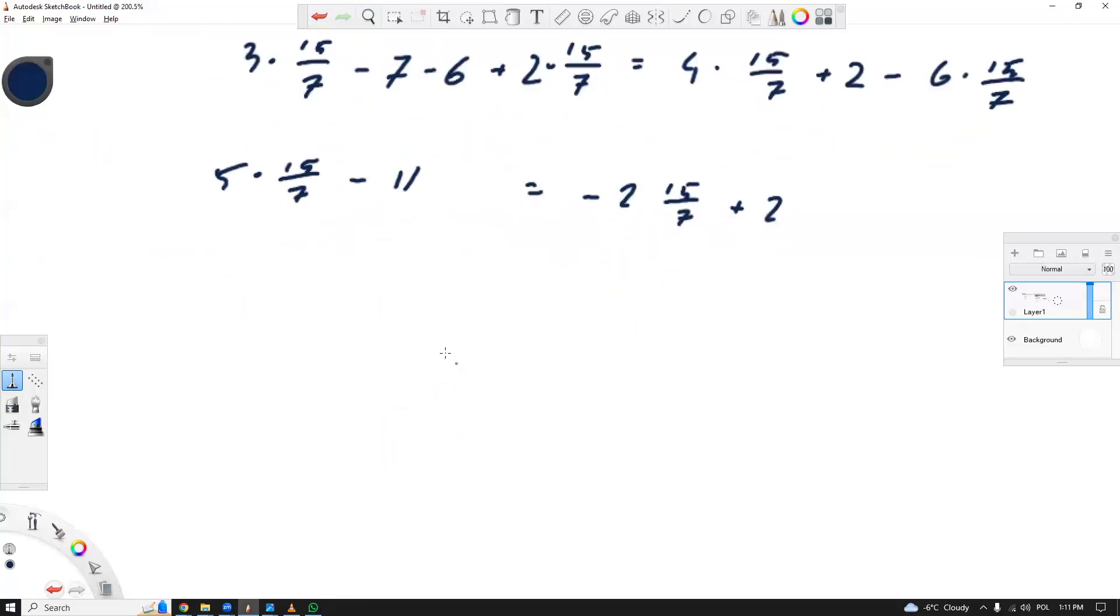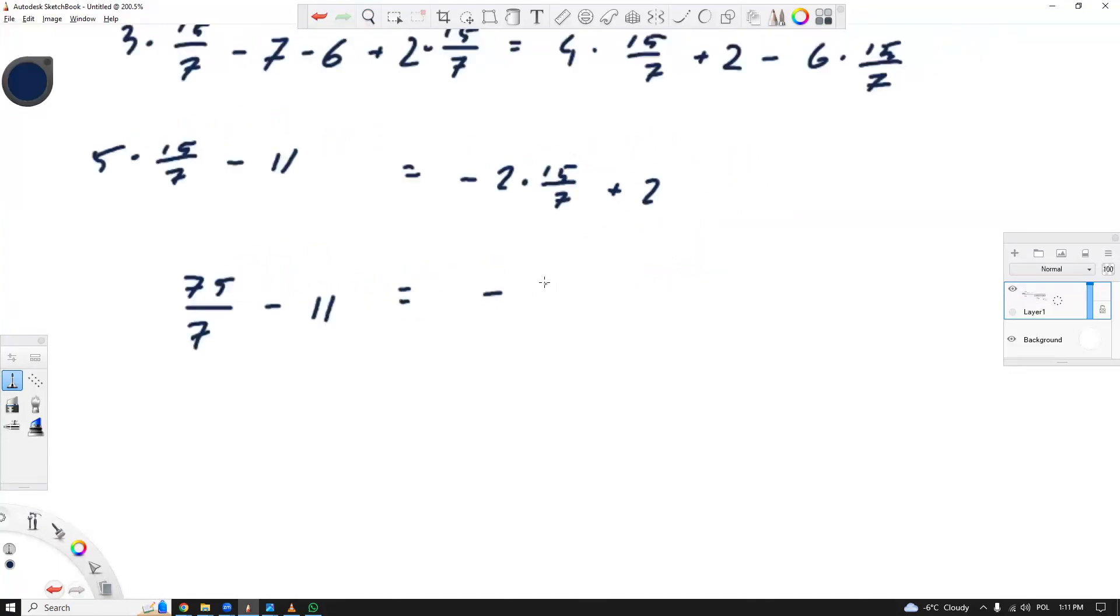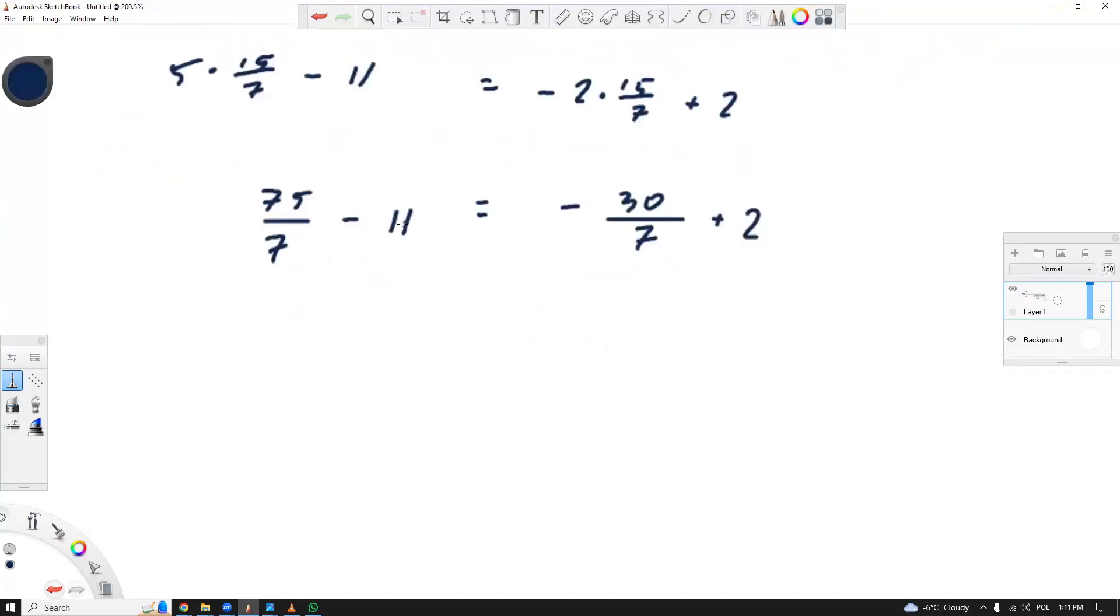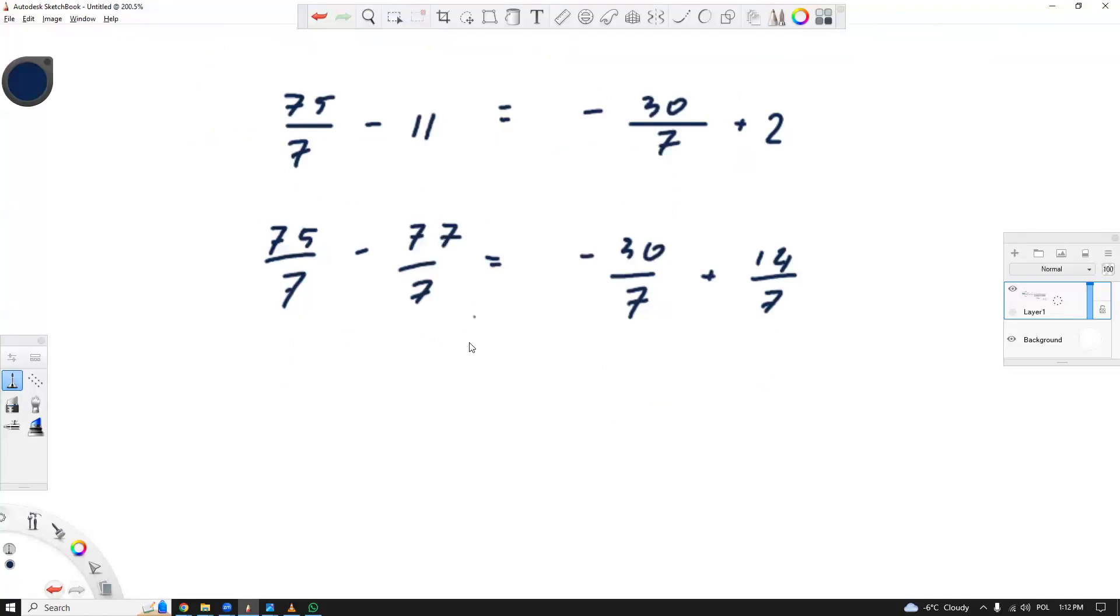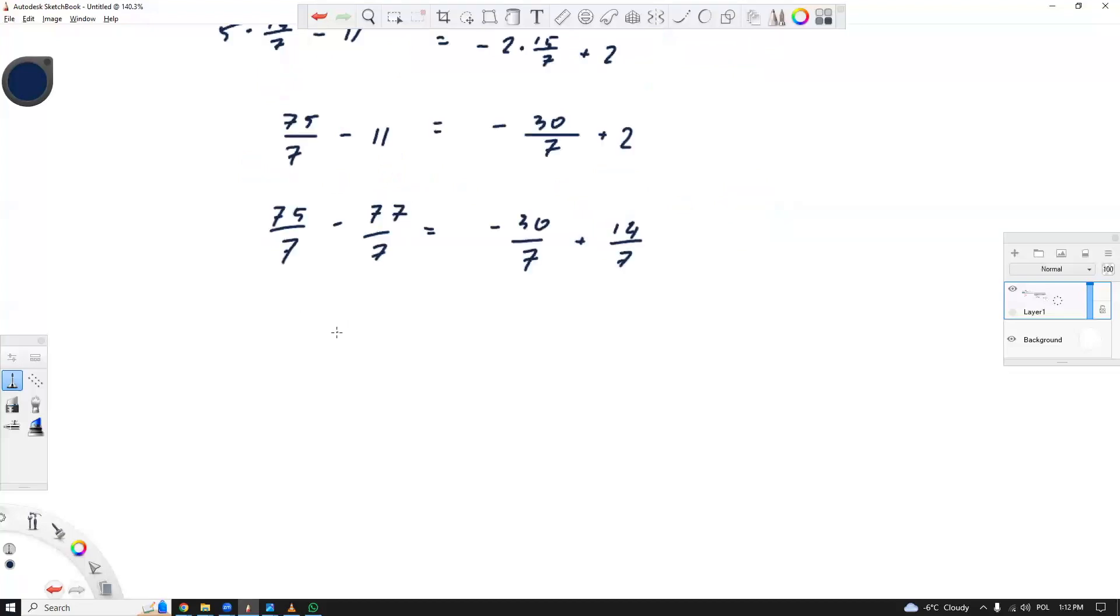So now we could do some math here. So what is it? It is 75 divided by 7 minus 11, and here it's negative 30 over 7 plus 2. Now we could say, oh, 11 is the same as 77 over 7. And here 2 is the same as 14 over 7.